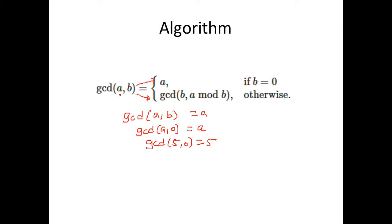If we have positive integers a and b and b is not equal to 0, then what we have to do is apply this repeatedly: GCD of a, b is nothing but GCD of b, a mod b. So we will be using this repeatedly to find the GCD. Let us understand this with a simple example.